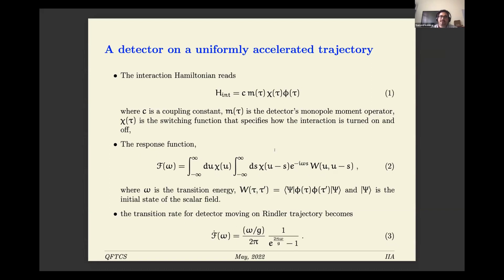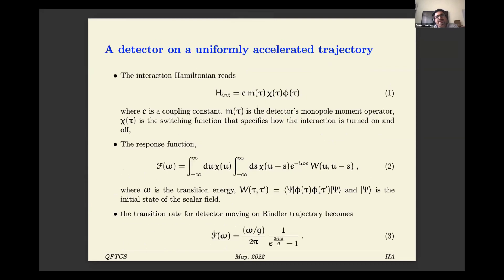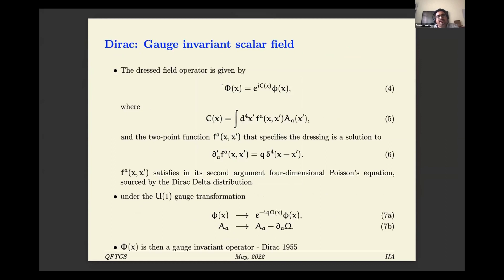Instead of coupling directly to the scalar field, we note that the scalar field is not gauge invariant under gauge transformations — it transforms in a particular way. So the standard interaction Hamiltonian is not gauge invariant. We look at a gauge-invariant operator constructed by adding an extra phase factor with a function C(x), defined as a two-point function integrated over the background vector potential field. As long as this two-point function satisfies the four-dimensional Poisson equation, one can show that the combined factor — the scalar field times the extra phase — is gauge invariant under these gauge transformations.